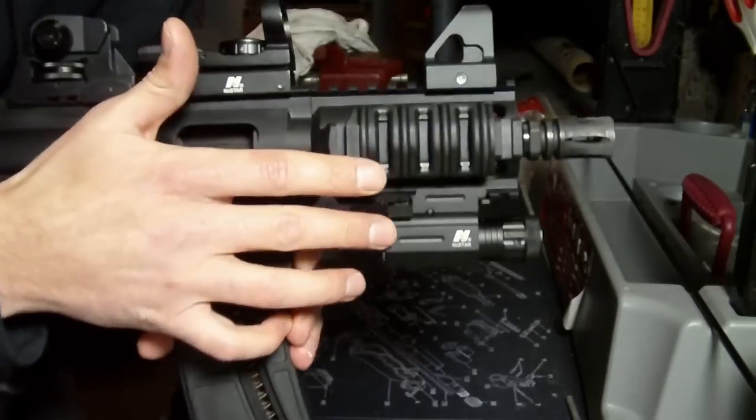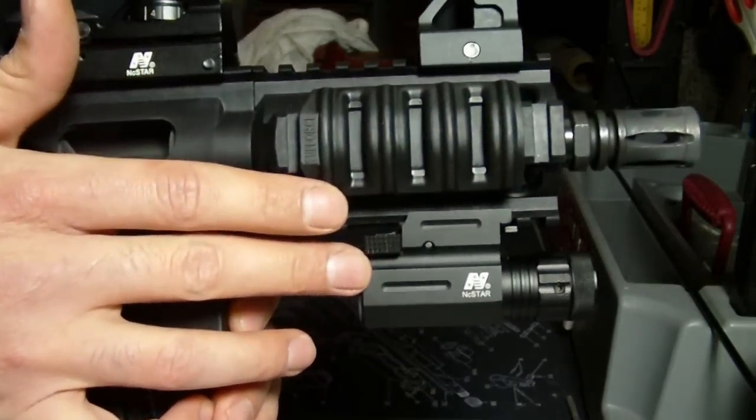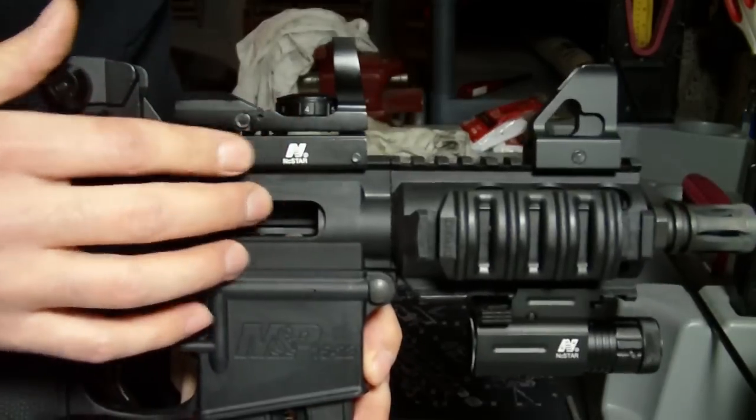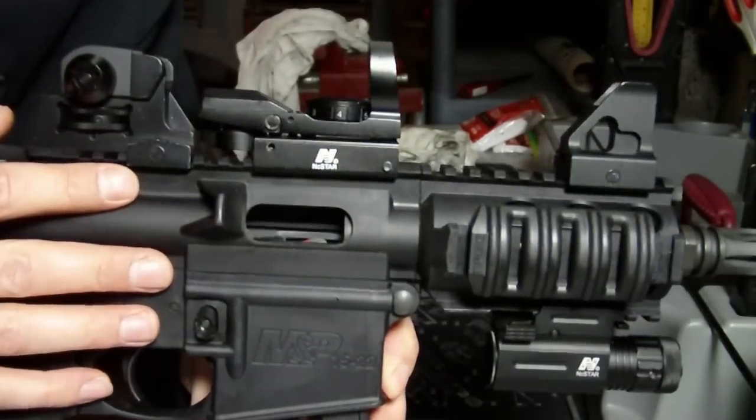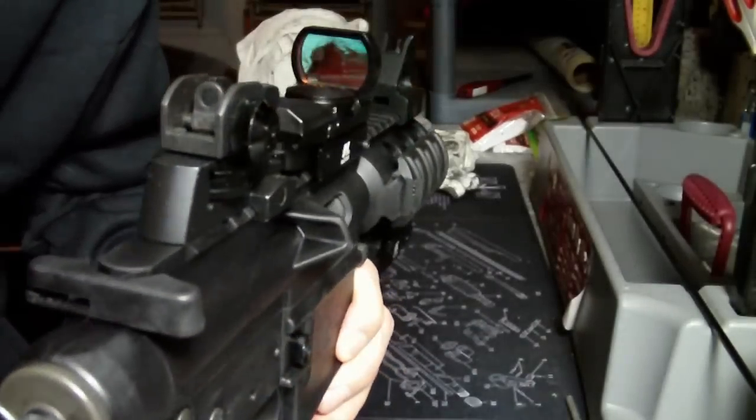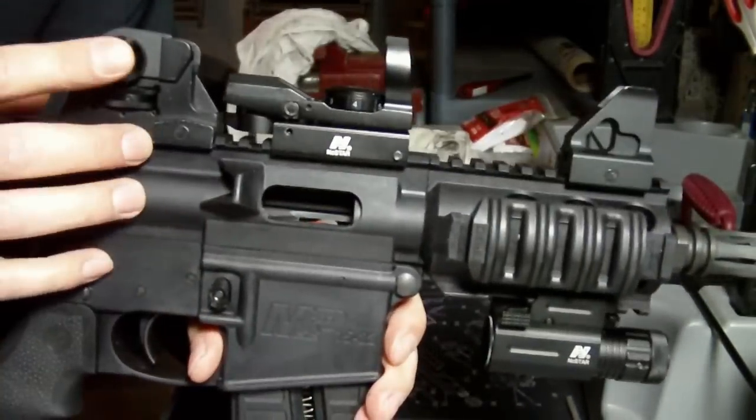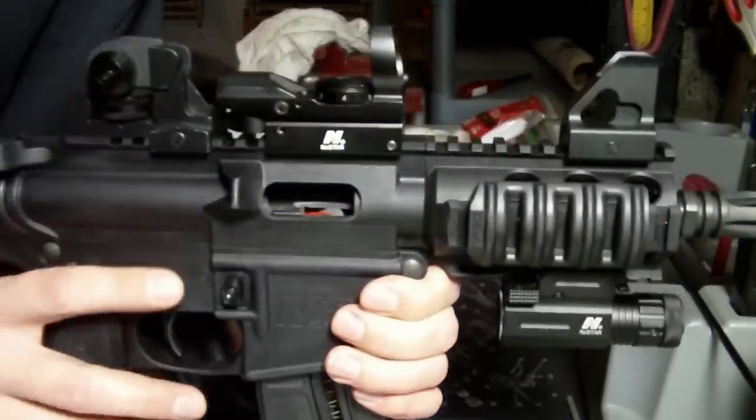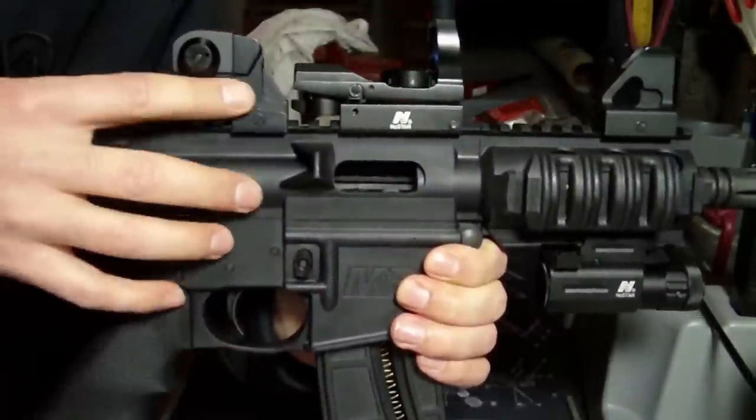I do have the green NC Star laser on it, which is nice for daytime shooting, just plinking, as well as an NC Star red dot with a 4 dot reticle on it, which I use in conjunction with the open dot sights. The open dot sights are actually pretty sweet. They work real well.